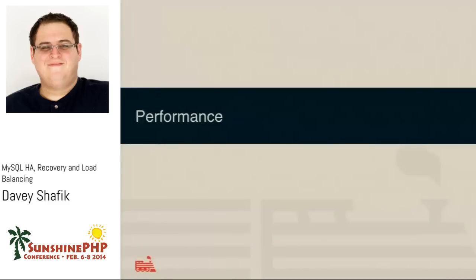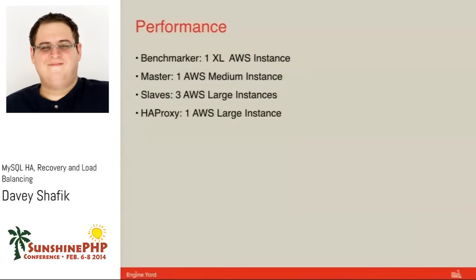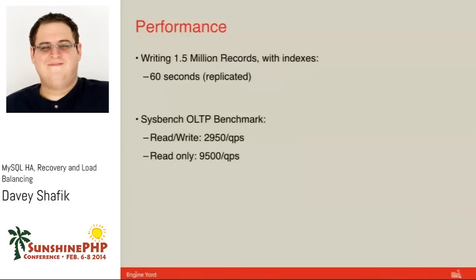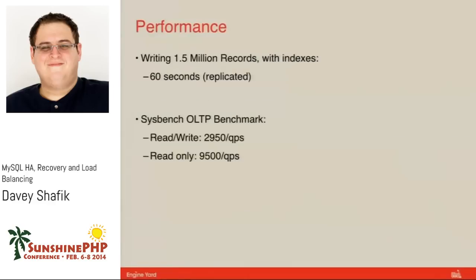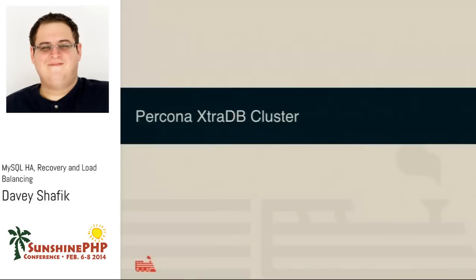Performance-wise for 5.6, same setup: one extra-large benchmarker, one medium master, three large slaves, extra-large for HAProxy. The one-and-a-half million records took 60 seconds to replicate — 13 seconds faster than 5.5. Our Sysbench read-write result: 2,950 queries per second — about 50 more than the non-semi-sync 5.5 version, mainly due to MySQL 5.6 performance improvements in general. Read-only is roughly the same — essentially a statistical nothing. The performance on 5.6 is pretty good.